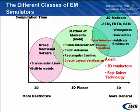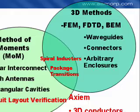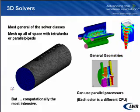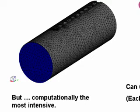The final group, the 3D methods, are the most general. The most popular are the finite element method and the finite difference time domain method, typically used for things like waveguides and simple structures like bond wires, BGA balls, etc. You can see here we've meshed up this waveguide filter, and notice that all of space is meshed — the interior of the waveguide. We're not meshing just the metal, which is why these methods are so computationally intensive, but also why they're so general.